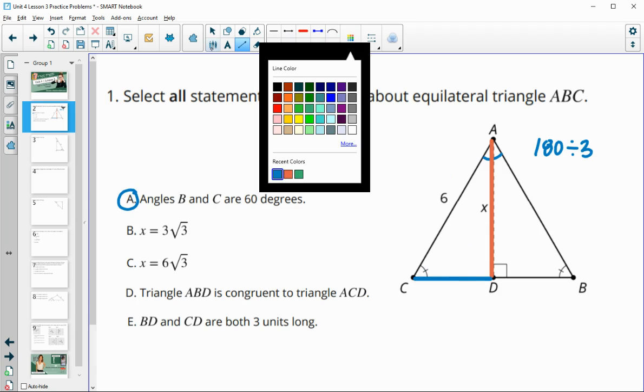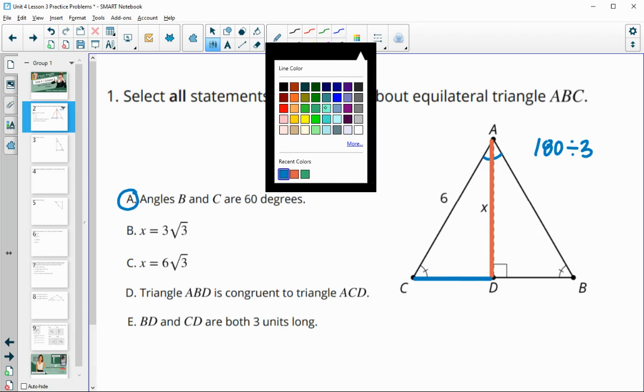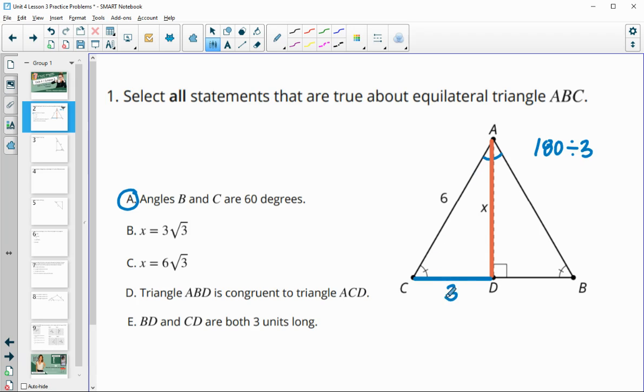And we know that this little short leg here is half the hypotenuse. So this leg here is 3 and then we take the blue segment times the square root of 3 to get this orange one. So we do know that it's 3 square root 3. So then it would not be 6 square root 3.